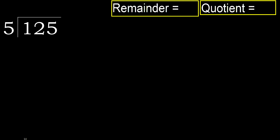125 divided by 5. 1 is less, therefore next. 12 is not less, therefore with 12.